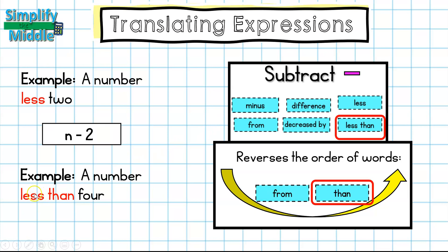But this one, when I have less than, I have a number less than four. So n, and I know I'm subtracting, and I have the number four, but the than from less than is actually going to reverse that order. So instead of n minus four, it's really four minus n. And this is one of the most common mistakes for expressions. So make sure whenever you see the word than or from, you reverse the order.